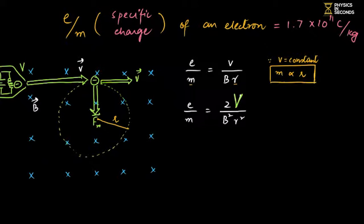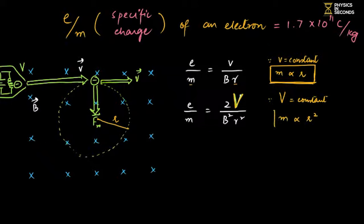From this, the deflection question becomes clear: the greater the mass, the greater the radius, and greater radius means less deflection. For the second relation (potential form), if the same Potential Difference is provided to accelerate the electron and proton, then the mass-radius relation is still direct but with power 2 — not power 1. You must remember these conditions and how the mass-radius relation changes with them.